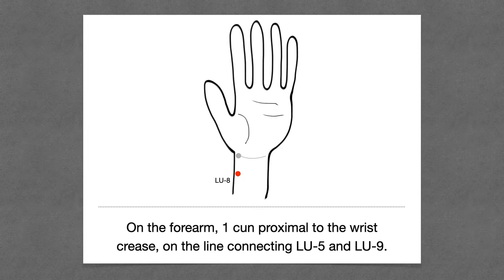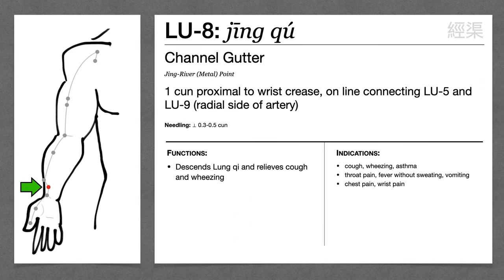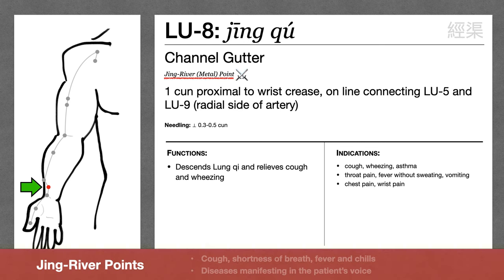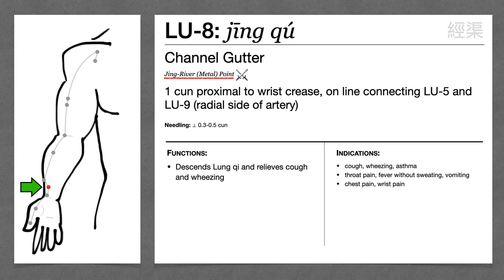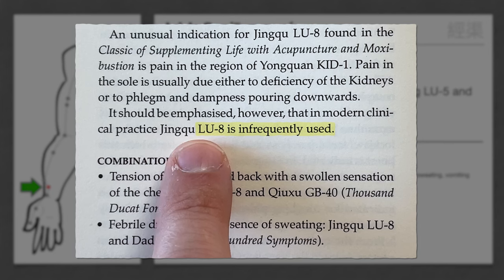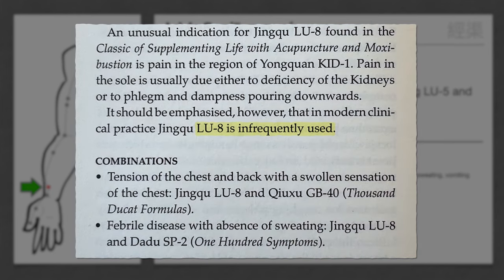Next is Lung 8, which is one cun proximal to the wrist crease. This is not a commonly used point. It's the Jing River and metal point of the lung channel. Classically, Jing River points are used to treat cough, shortness of breath, and fever and chills. Maciocha mentions it's good for problems of the throat, but even Dedman says that Lung 8 is an infrequently used point.